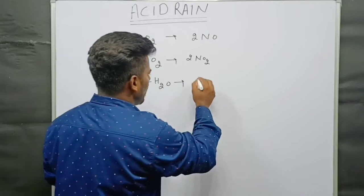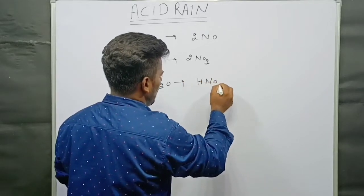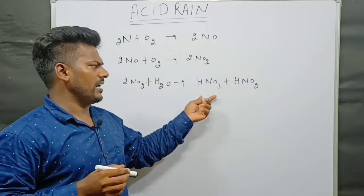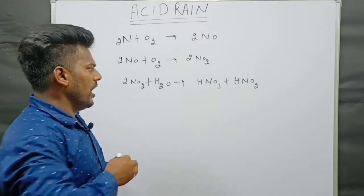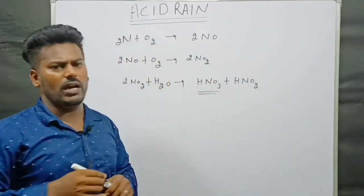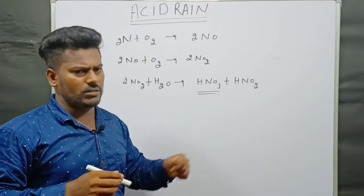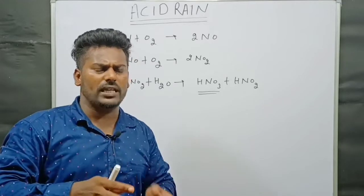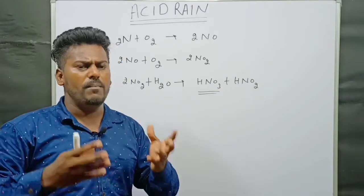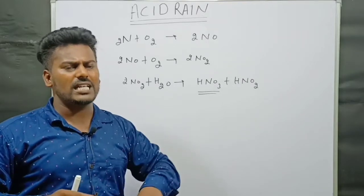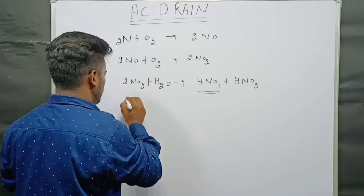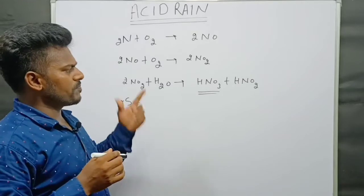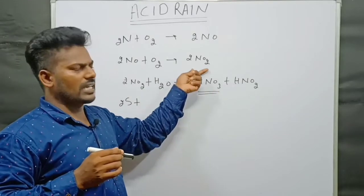The reactions produce HNO3 and HNO2, which are hydrogen nitrate and hydrogen nitrite — these are the acids formed from nitrogen oxide reactions.